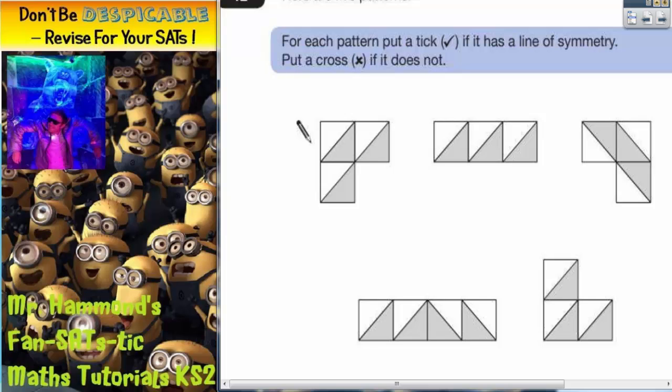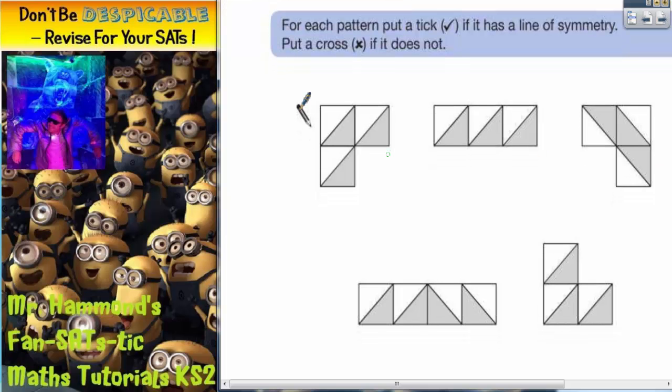So we're talking about symmetry. Now with symmetry it's a good idea to put your hand up and ask for a mirror if you haven't got one. Because you can put a mirror where you think it is a line of symmetry and see if what you see in the mirror matches what is on the other side of the mirror. If it does it is a line of symmetry. If it doesn't it is not a line of symmetry.